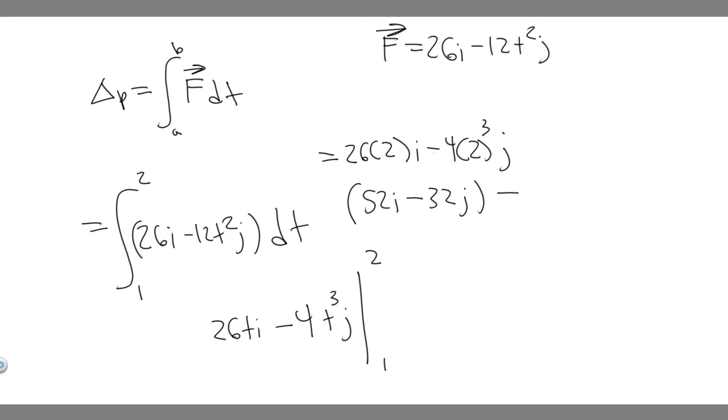If we plug in one, we're going to get that equals 26. We're just minusing 26 times 1i minus 4 times 1 cubed j. So 26 times 1 is just 26, so 26i minus 1 cubed is 1 times 4 is 4, so 4j.